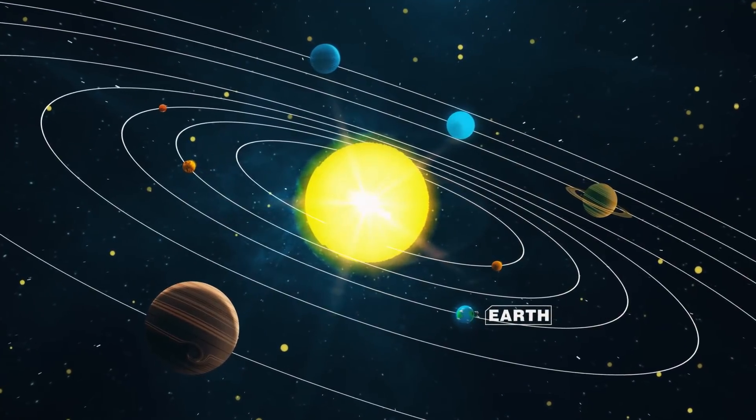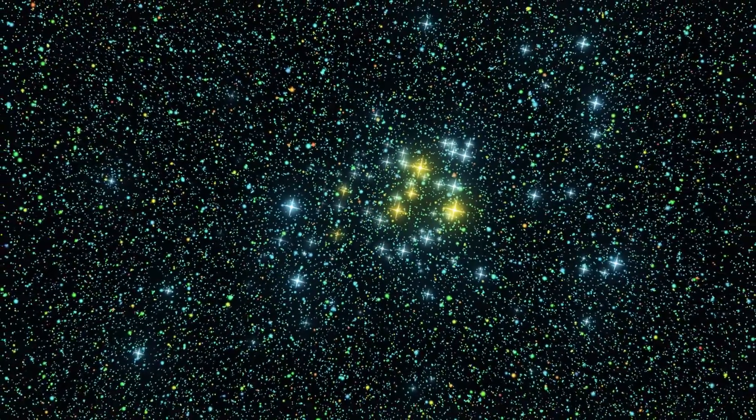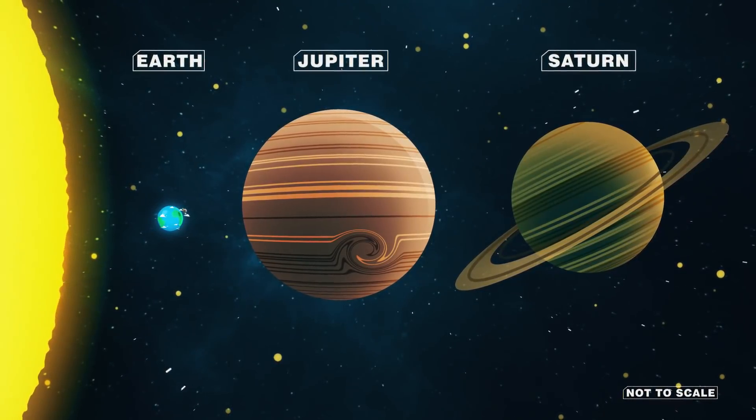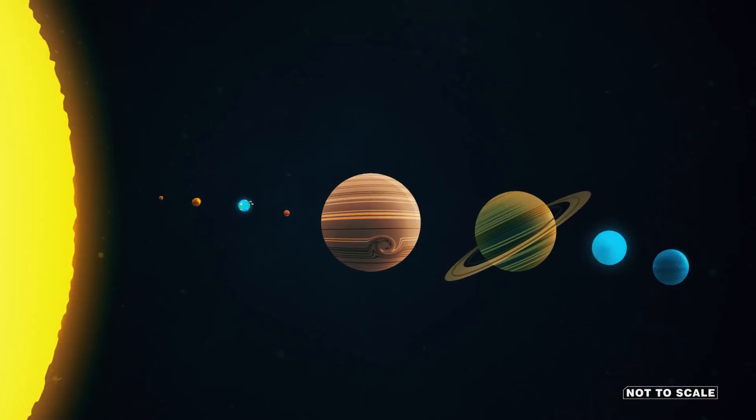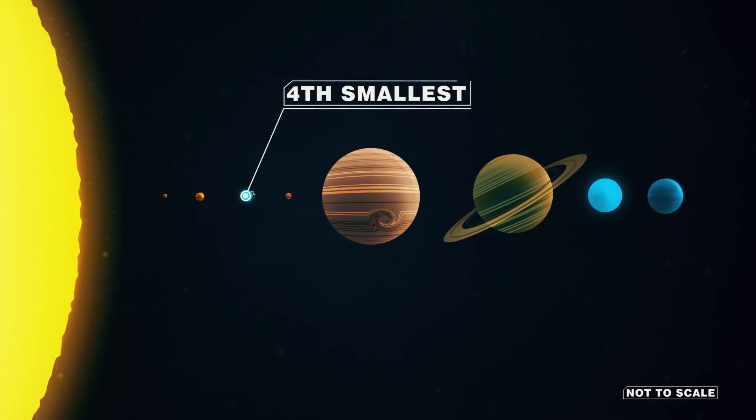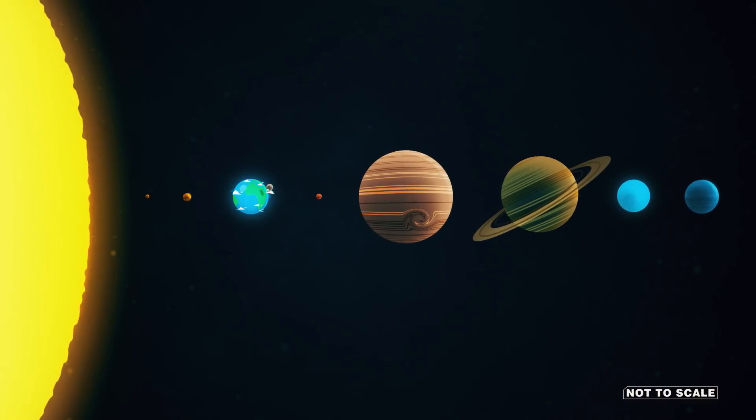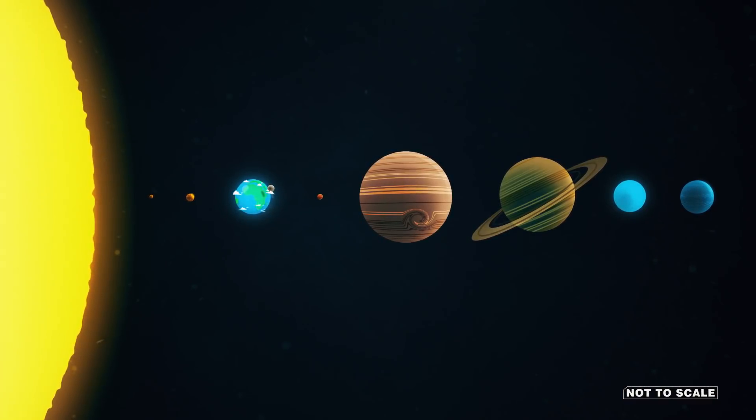Even in our solar system, which pales in comparison to galaxies, nebulas, and clusters of stars, Earth is dwarfed by gas giants like Jupiter and Saturn. Of the eight planets in our solar system, Earth is the fourth smallest. But what if the Earth grew ten times larger? Is that even possible?